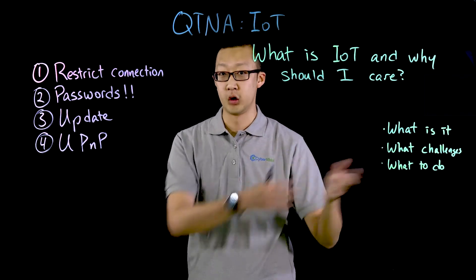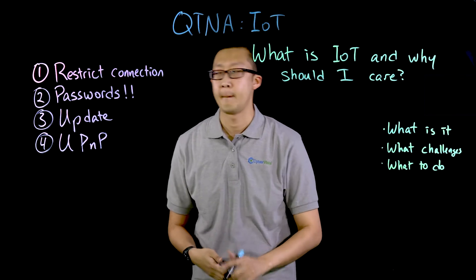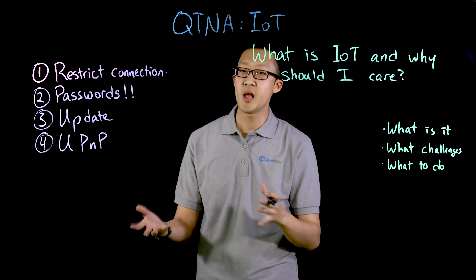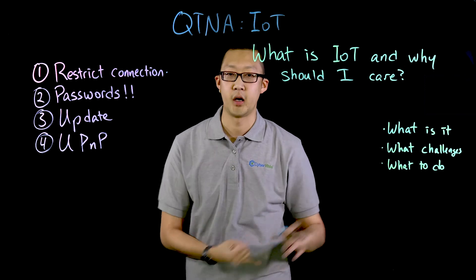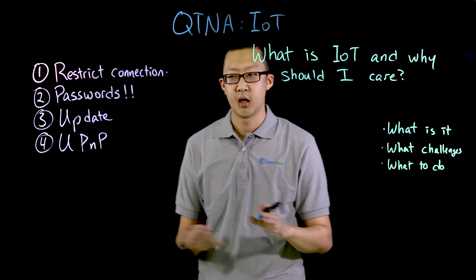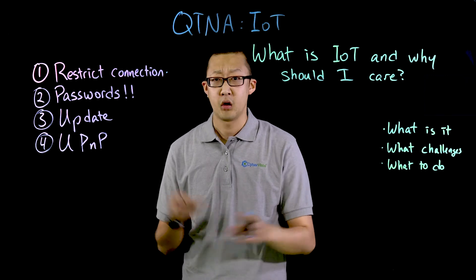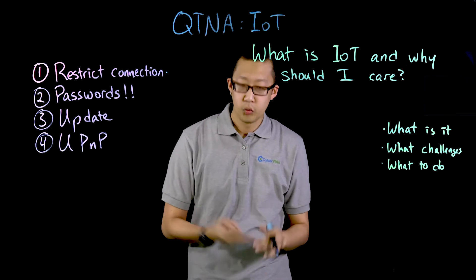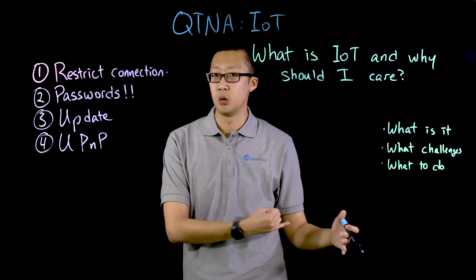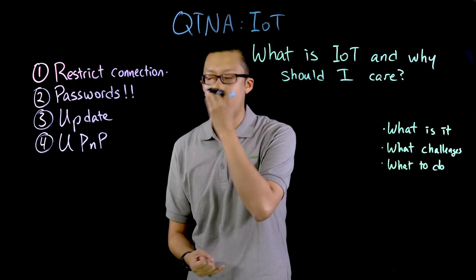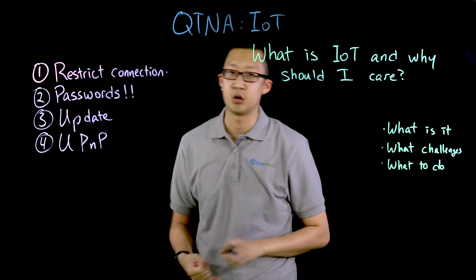Now that we've covered some of the challenges and vulnerabilities present in these different IOT devices, let's see what we can do to protect our network and devices. The first is restrict connection. You should restrict what is actually connected to your network. If you have different IOT devices, do you need them all connected to your home network at all times? For instance, you could have a smart fridge in your home, but if the only functionality it's providing is to keep your food cold, do you really need it connected to your internet?